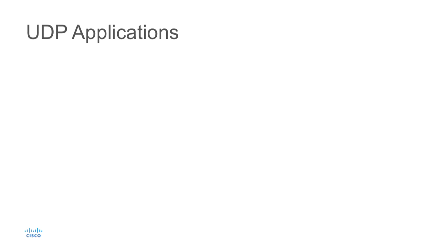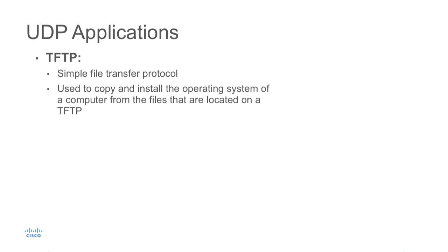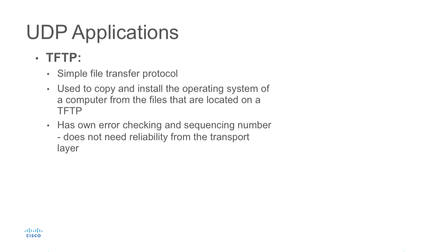What kind of applications would use UDP? One common application is TFTP, the Trivial File Transfer Protocol — a very simple transfer protocol used to copy operating systems. We used to use this a lot with Cisco routers: a router could act as a TFTP server or client to copy files back and forth, such as backing up or restoring a device image. TFTP is not as bulky as FTP — it doesn't do authentication, but it does its own error checking and sequence numbering, so it doesn't need transport layer reliability, making UDP a perfect fit.